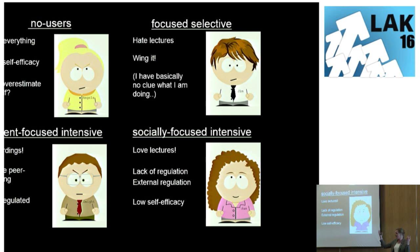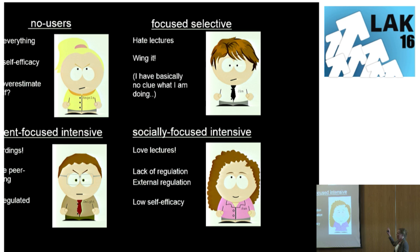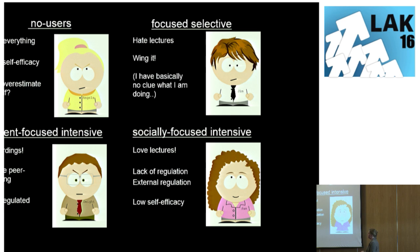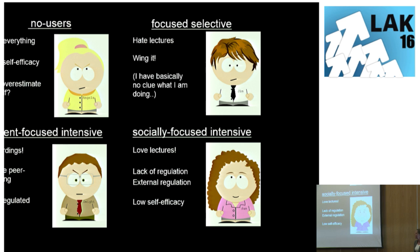We have the no-users who think they don't need anything. She shows high self-efficacy at the beginning of the course — she probably overestimates herself — so she decides against attending lectures or using the LMS. Then we have Jim, who hates lectures, hardly shows up, and has basically no idea what he's doing. Then we have Dwight, who loves recordings of those lectures but shows a clear disliking of peer learning. He's the online learning student we really like — highly self-regulated — but the one lecturers don't like because he doesn't show up. He can manage though. And then we have Ben, who loves lectures but has an extreme need for external regulation and a low self-efficacy, which is basically why she shows up.